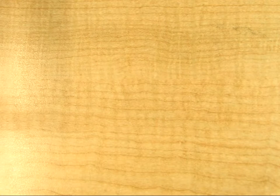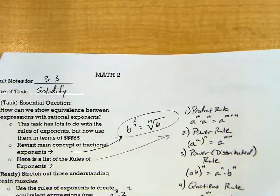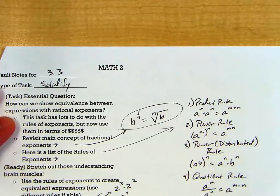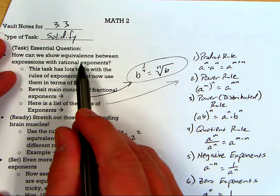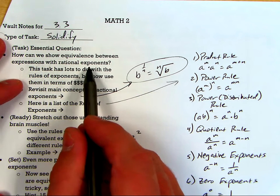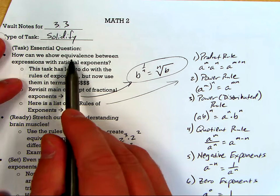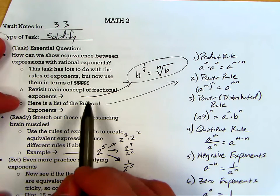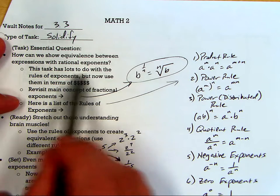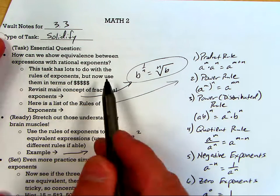Okay, there's the beginning of the vault notes. Let's take a look at the rest of the vault notes. How can we show equivalence between expressions with rational exponents? That is the big thing we're trying to show equivalence like the last question on task. This resurfaces the idea of fractional exponents. And now we're putting them in terms of money and everybody's interested in money.